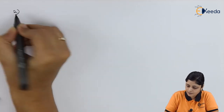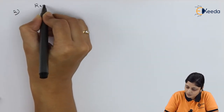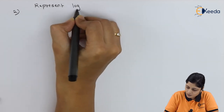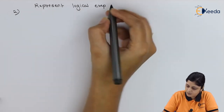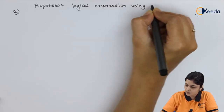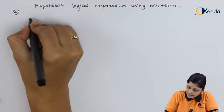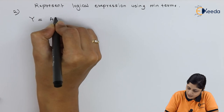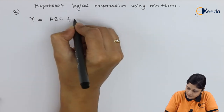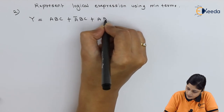Now we will discuss the second example. The aim is to represent the logical expression using minterms. The second example consists of y equals a·b·c plus ā·b·c plus a·b̄·c̄.